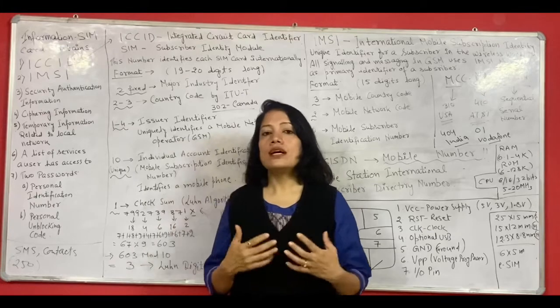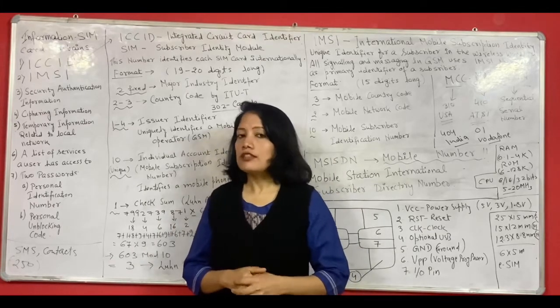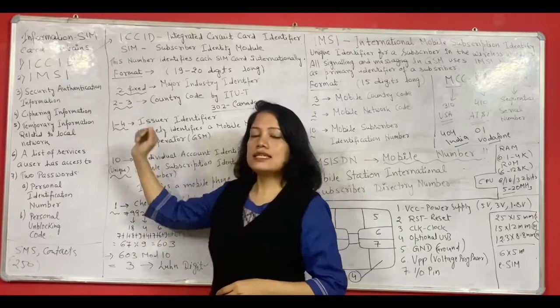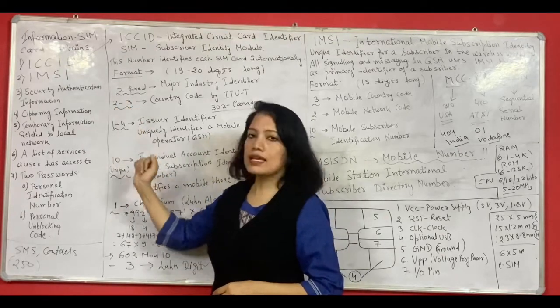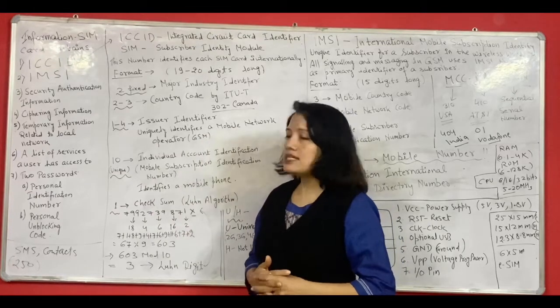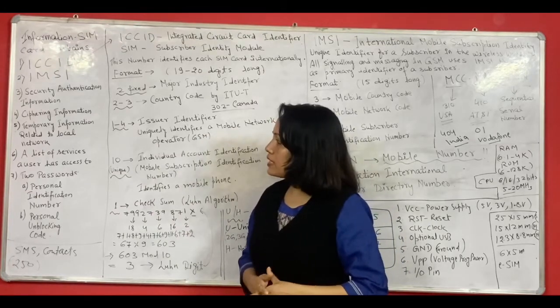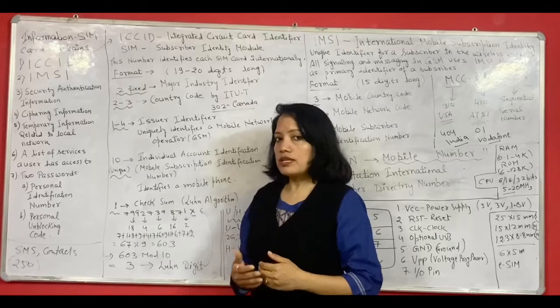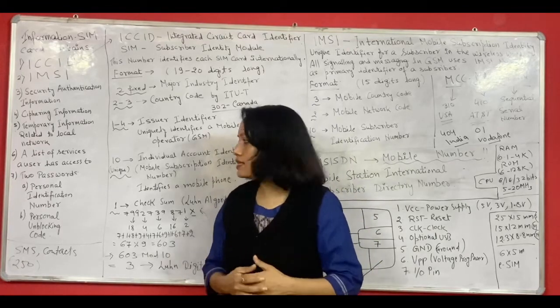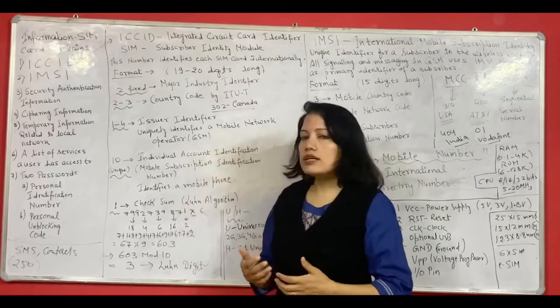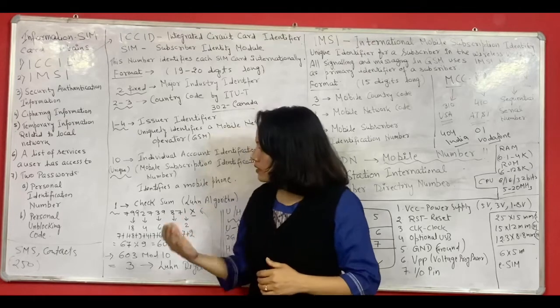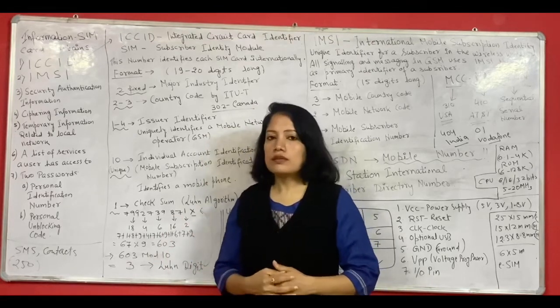We all know that a mobile phone cannot work without a tiny chip which is called as SIM card. Now a SIM card can hold a lot of information and those information I have listed out here. First is ICC ID number, then IMSI number, then security authentication information, then surfing information, temporary information related to your local network, then a list of services a user has access to in a particular network and then it also contains two passwords. One is personal identification number and second is your personal unblocking code.